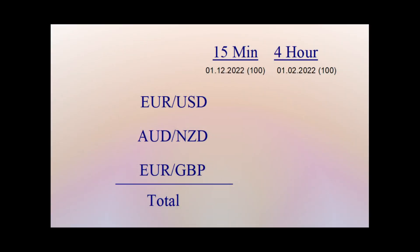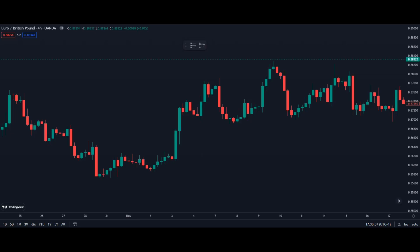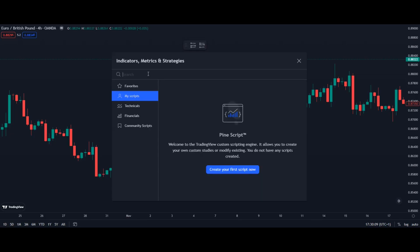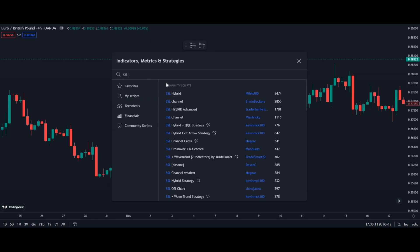As usual we are back-testing this indicator on the EURUSD, the AUDNZD, and the EURGBP. On the 15-minute chart we're going back 3 months, and on the 4-hour chart we're going back 1 year, and we are targeting 100 trades. To use this indicator, just click on it, type in SSL, and we're going to use this SSL Channel here from Irwin.